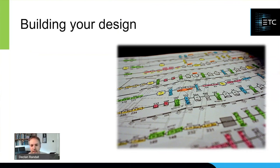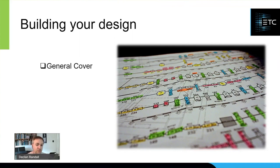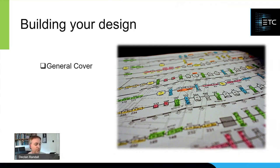Once I've got that rough framework, and hopefully all the technical drawings from the set designers have come through, I'm able to start planning the design. I tend to work in four stages. The first stage is my general cover — making sure we can see everybody. That's objective number one: visibility. I always make sure my general cover is as rock solid as it can be before I move on to anything else.